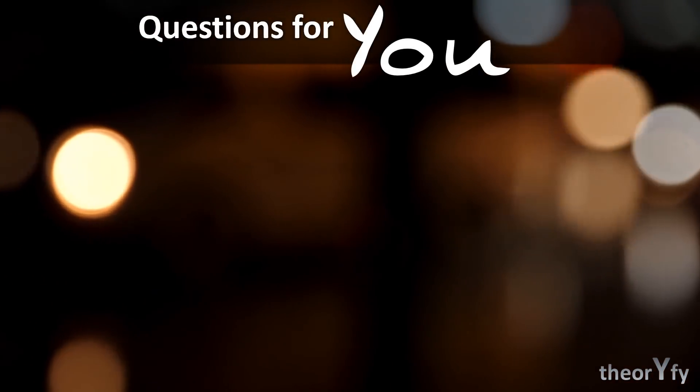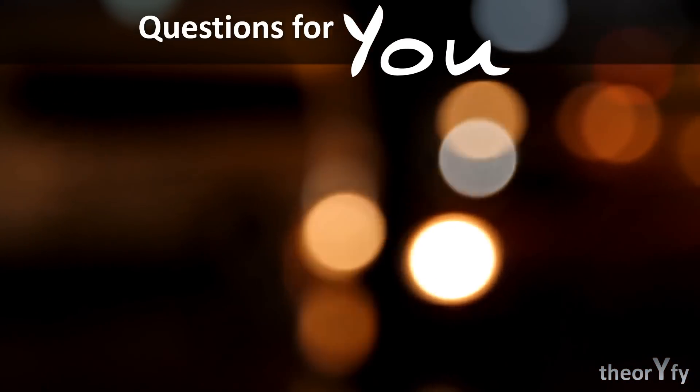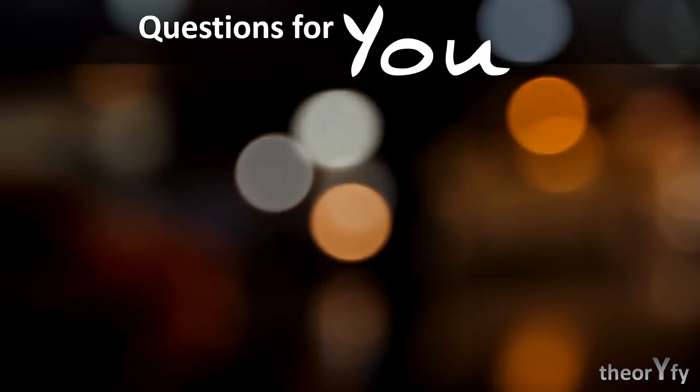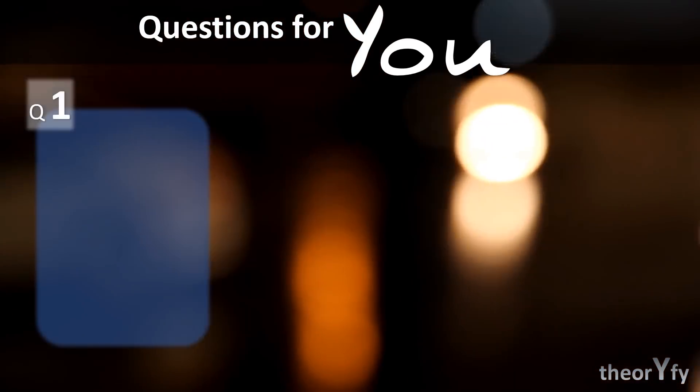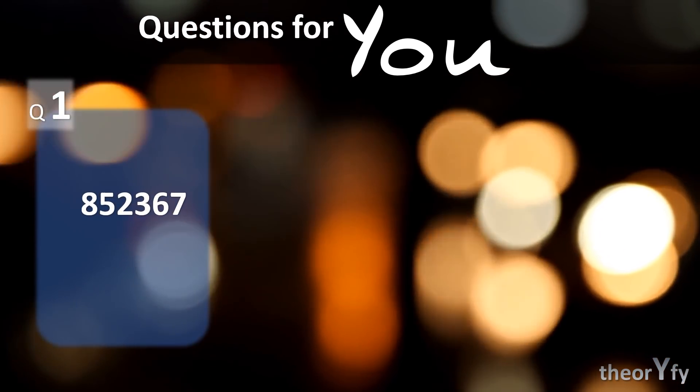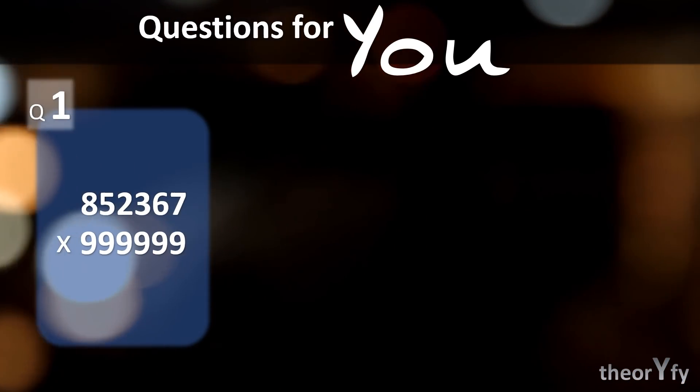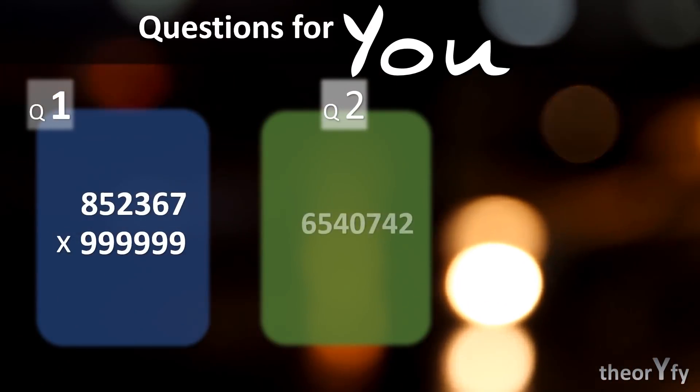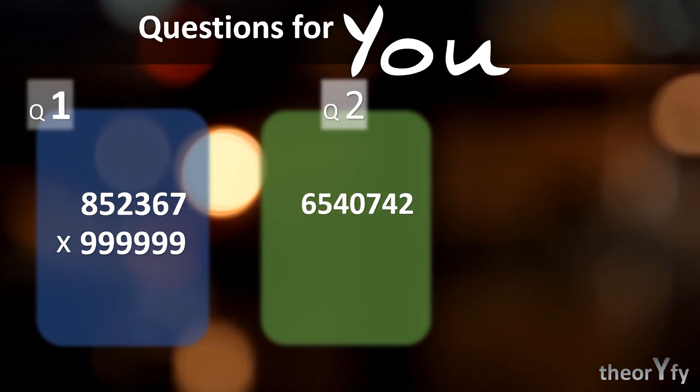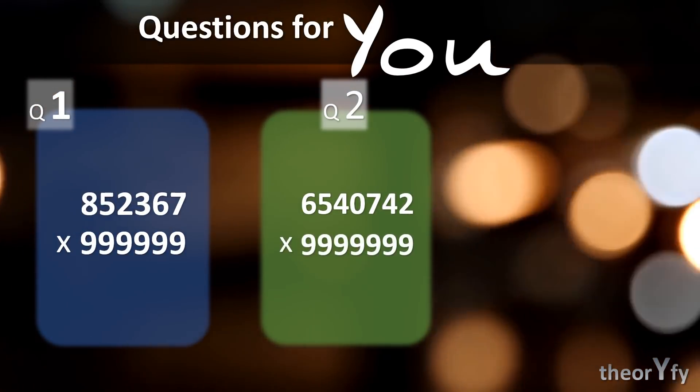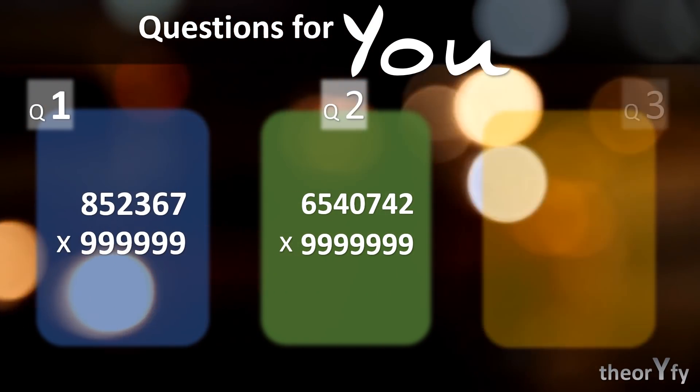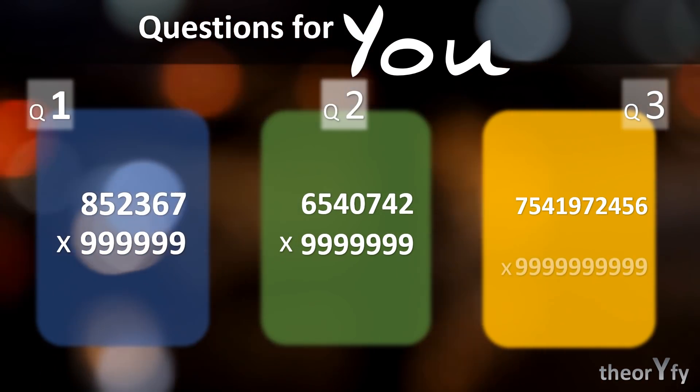Now I believe you got the method and you can try it yourself. Just to check, there are a few questions for you. Question number 1, you have to multiply this number with equal number of 9's. Question number 2, again this is the number and you have to multiply it again with equal number of 9's. And there is question 3.